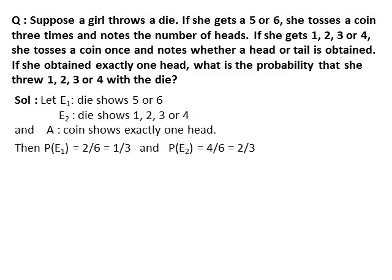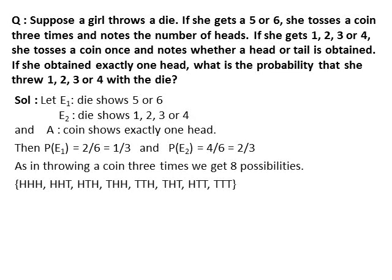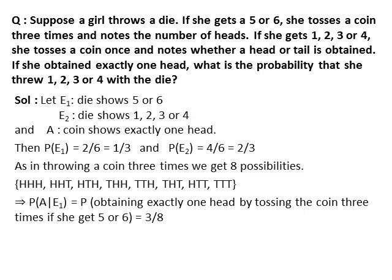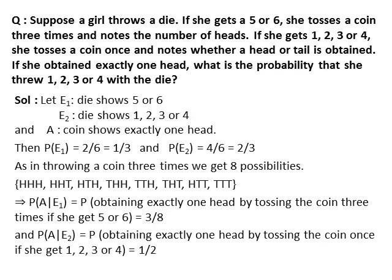PE1 equals the probability that the die shows 5 or 6, which equals 2/6 = 1/3. PE2 equals the probability that the die shows 1, 2, 3 or 4, which equals 4/6 = 2/3. As in throwing a coin 3 times we get 8 possibilities, P(A|E1) equals the probability of obtaining exactly 1 head by tossing the coin 3 times if she gets 5 or 6, which equals 3/8. And P(A|E2) equals the probability of obtaining exactly 1 head by tossing the coin once if she gets 1, 2, 3 or 4, which equals 1/2.